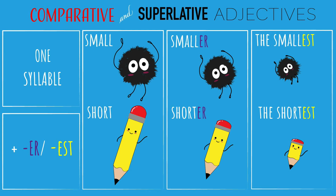Here are some examples of one-syllable comparative and superlative adjectives. Small, smaller, the smallest. Short, shorter, the shortest.